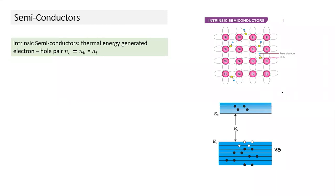In silicon or germanium, the outermost orbit has two s and six p states, so eight electrons are possible. Out of these eight, four are occupied and four are empty. When atoms are at close spacing, as in a crystal, these energy bands split into two levels — four at a higher level and four at a lower level. At zero Kelvin, the lower level energy states are fully occupied and the upper level are fully unoccupied.